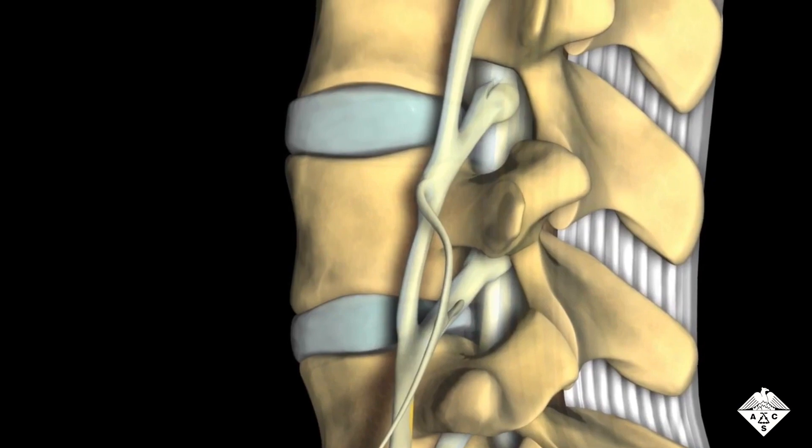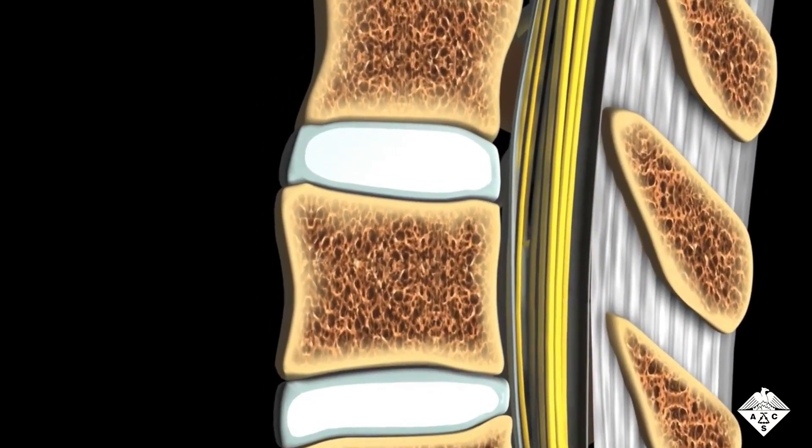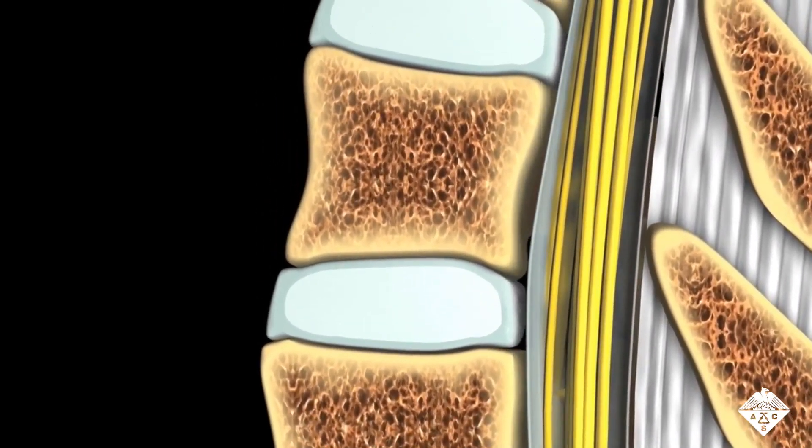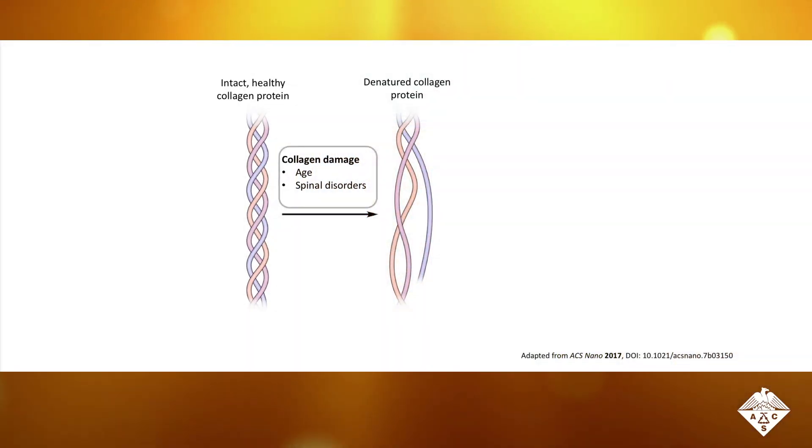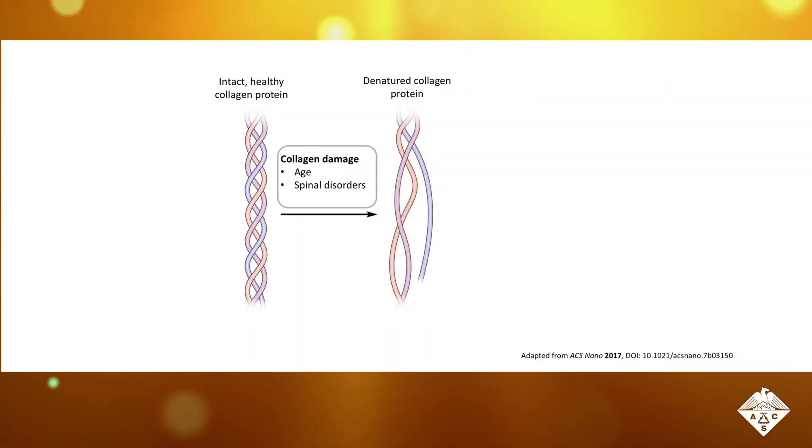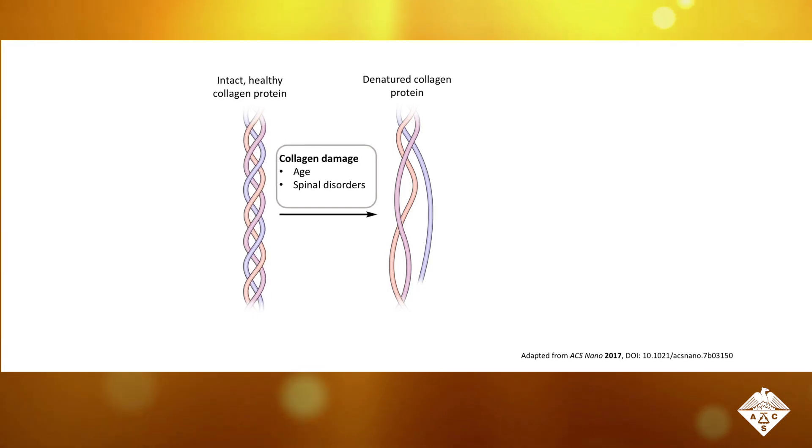Daily wear and tear, as well as some spinal disorders, can thin the soft and protective tissues in the spine by breaking down collagen proteins. As the proteins break down, they unwind and lose their structure and ability to cushion vertebrae.